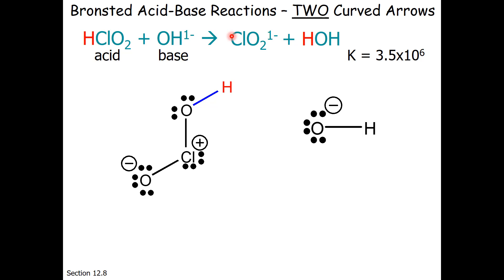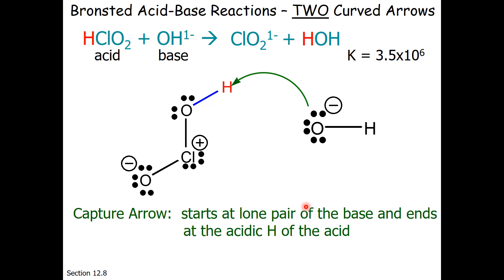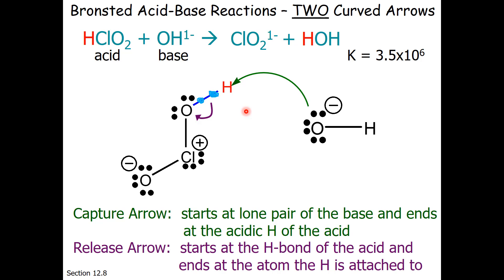Bronsted acid-base reactions have two curved arrows. The first arrow is a capture arrow. It starts at the lone pair of the base, so that's right here. These two electrons reach out and grab that hydrogen. Kind of like two hands belonging to a person, the hydroxide, reaching out to grab hold of that hydrogen. Remember that the bond holding the hydrogen to the oxygen is composed of two electrons. So I call this the release arrow. The two electrons in the bond lose their attachment to hydrogen and fall back to oxygen to become a lone pair. So it is like the hydroxide reaching out to take hydrogen and the chlorous acid letting go. Capture and release.